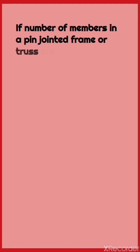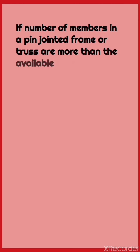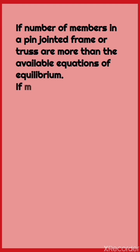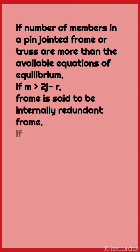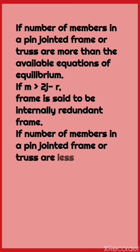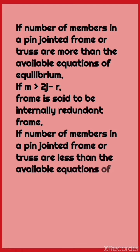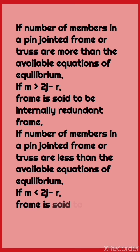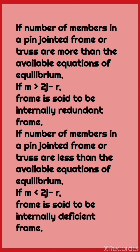If the number of members in a pin-jointed frame or truss are more than the available equations of equilibrium, i.e., if m > 2j − r, the frame is said to be an internally redundant frame. If m < 2j − r, the frame is said to be an internally deficient frame.